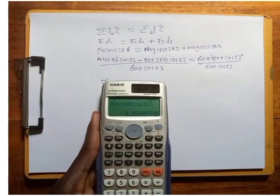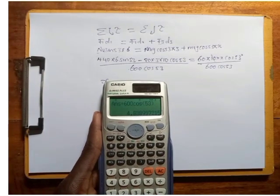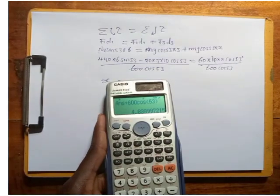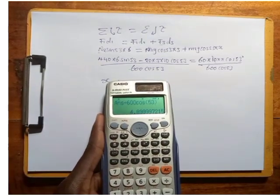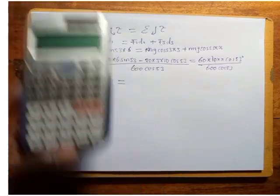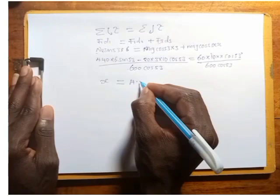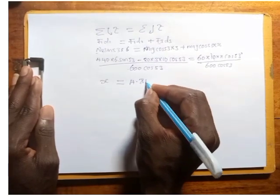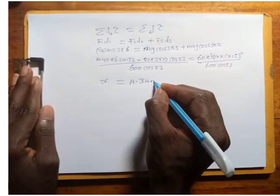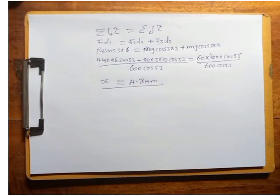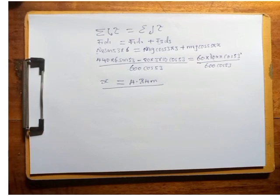So 4.84 meters is the distance to which the electrician can climb before the ladder slides. That's how you solve this type of question. Please subscribe to the channel and share for more videos — thank you.